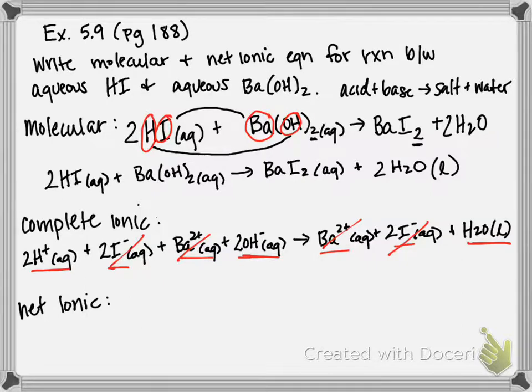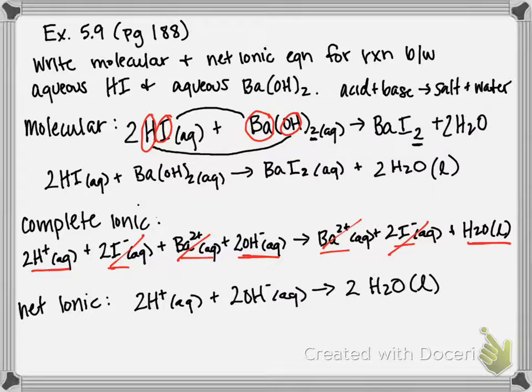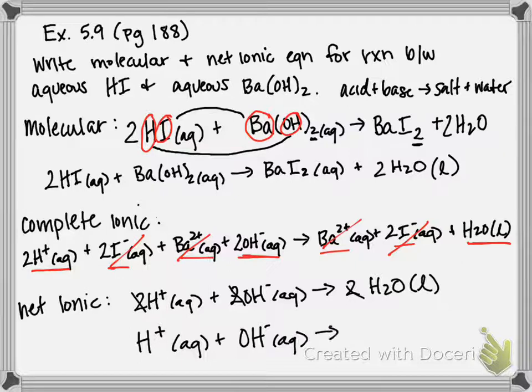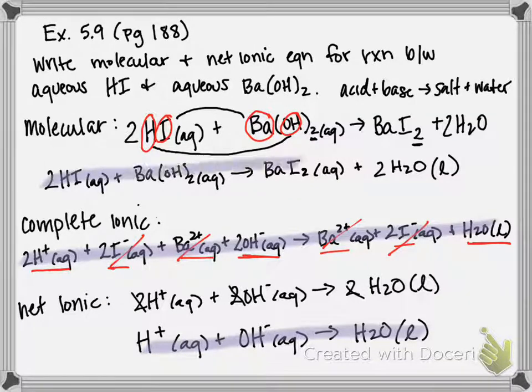So we can rewrite our complete ionic to just a net ionic as 2H+ plus 2OH- gives you 2H2O. And technically we want to make sure this is in its most reduced form. So all of these twos would cancel, and our formal final answer would be H+ aqueous plus OH- aqueous gives you H2O liquid. And that is your final net ionic. This is your complete ionic. And written here is your molecular equation.